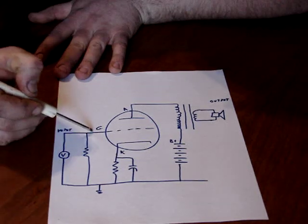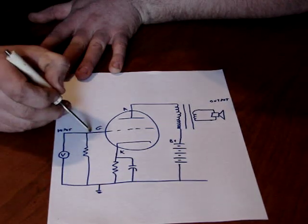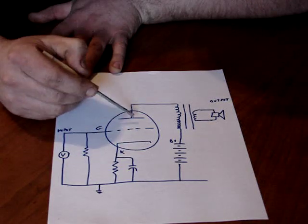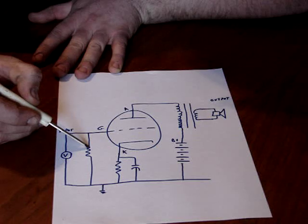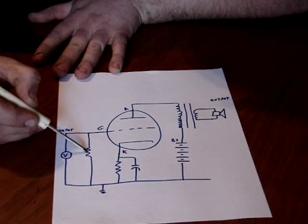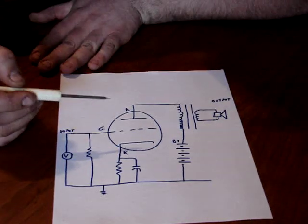You change the bias by how much voltage is on the grid. So if the grid becomes more negative, less current will flow. So to make the grid more negative, you put a smaller resistor here.